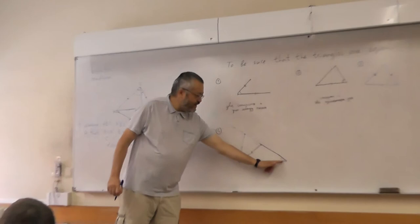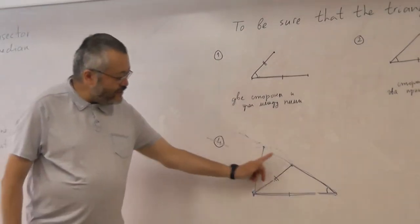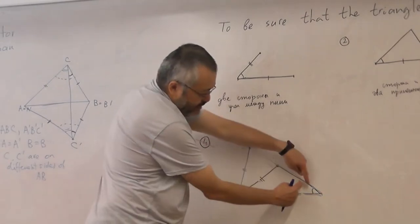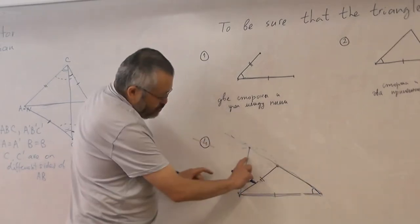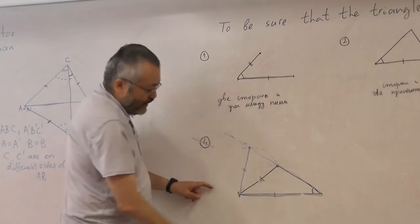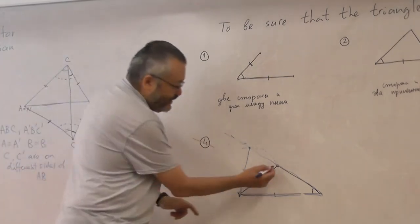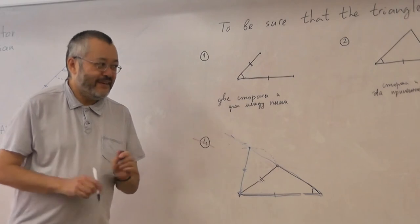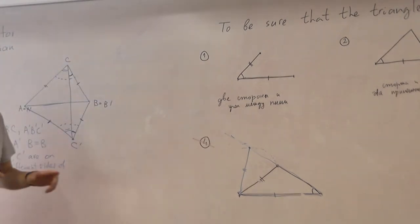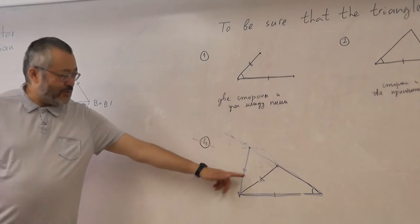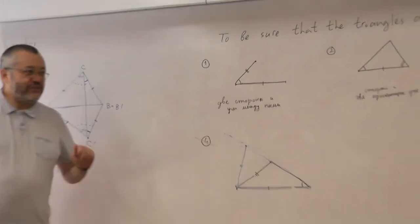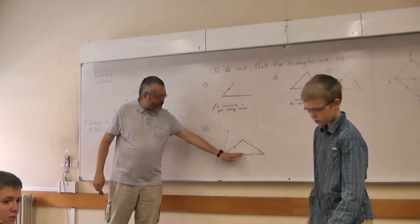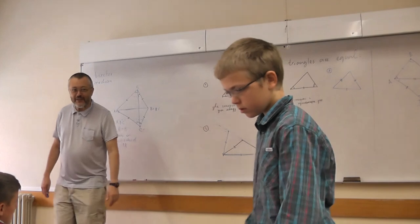So we have one triangle and another triangle, and they have exactly the same, this side exactly the same angle, and also this side is equal. But since they are in different positions, the third side is different. So it's not a good idea to consider three elements which are not exactly like this.